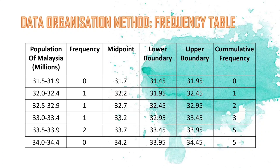For the data organization method, we use a frequency table. The frequency table includes population of Malaysia, frequency, midpoint, lower boundary, upper boundary, and cumulative frequency. We add a class interval before the first class and after the last class. The frequency of the first and last class is zero. The midpoint helps us draw the frequency polygon, while the lower and upper boundary help us draw the histogram.